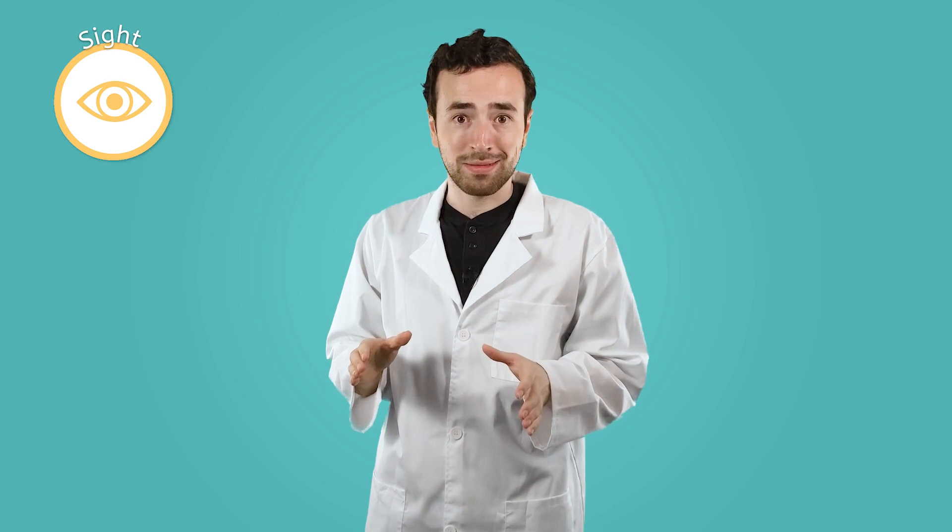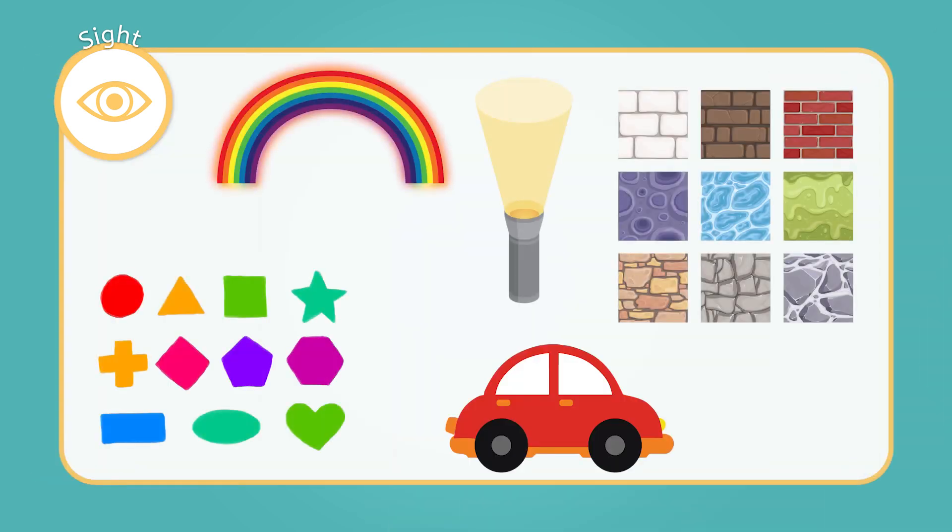However, the sense of sight is the most complex sense. Sight gives us information about colors, shapes, textures, light, movement, and more.